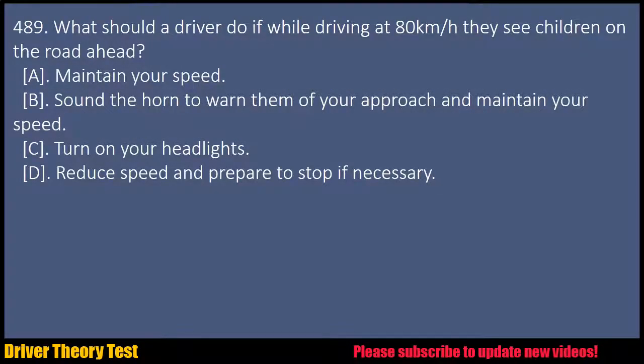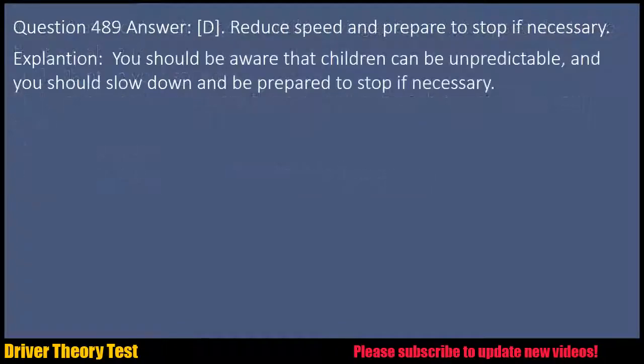Question 489: What should a driver do if, while driving at 80 km/h, they see children on the road ahead? A. Maintain your speed. B. Sound the horn to warn them of your approach and maintain your speed. C. Turn on your headlights. D. Reduce speed and prepare to stop if necessary. Answer: D. Reduce speed and prepare to stop if necessary. Explanation: You should be aware that children can be unpredictable and you should slow down and be prepared to stop if necessary.